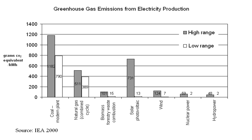Renewable energy flows involve natural phenomena such as sunlight, wind, rain, tides, plant growth, and geothermal heat. As the International Energy Agency explains, renewable energy is derived from natural processes that are replenished constantly — deriving directly from the sun or from heat generated deep within the earth. This includes electricity and heat generated from solar, wind, ocean, hydropower, biomass, geothermal resources, and biofuels and hydrogen derived from renewable resources. Climate change concerns and the need to reduce carbon emissions are driving increasing growth in renewable energy industries.